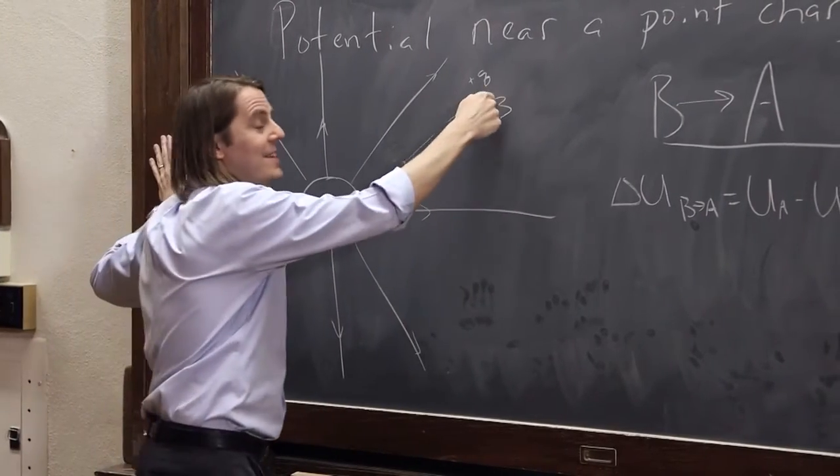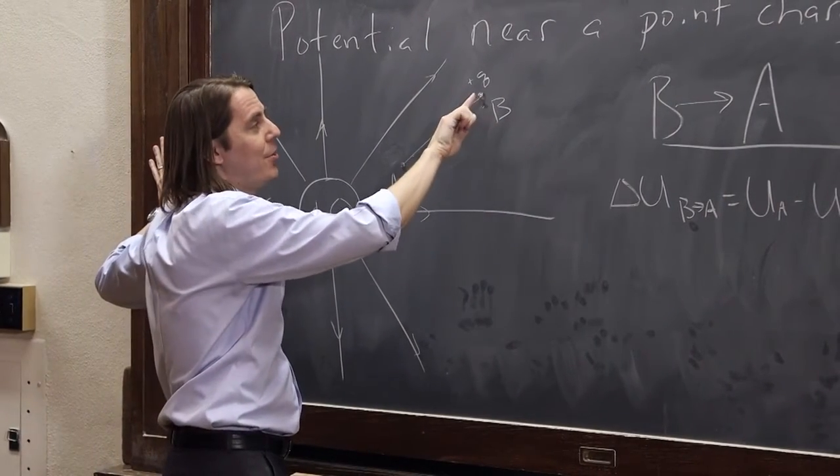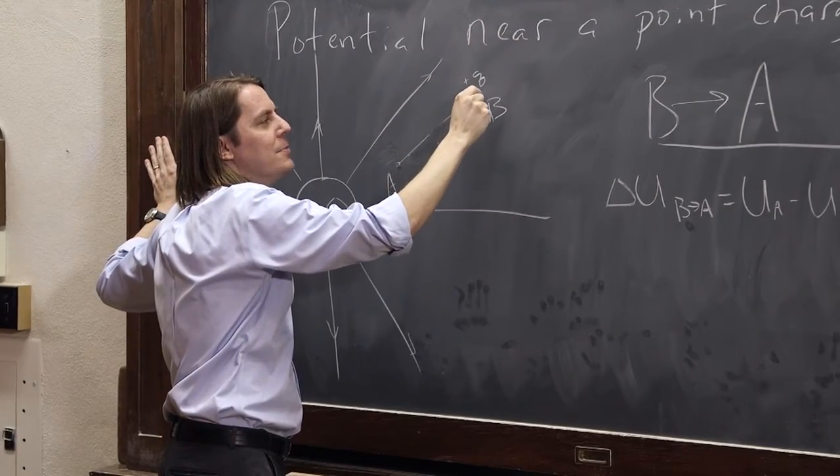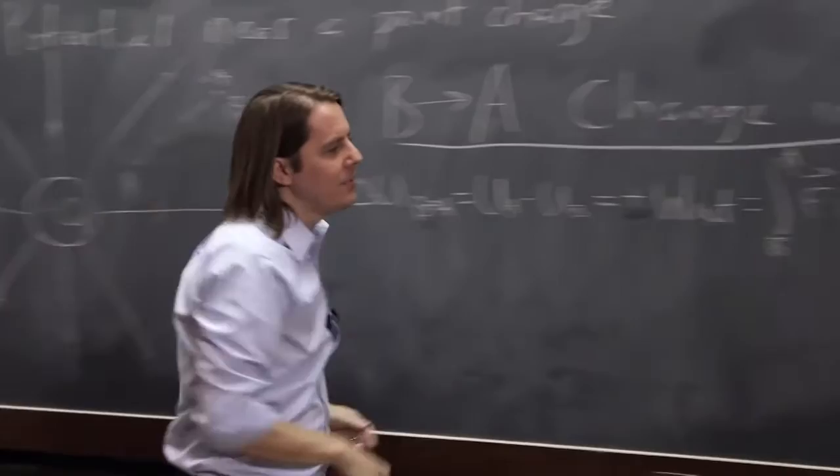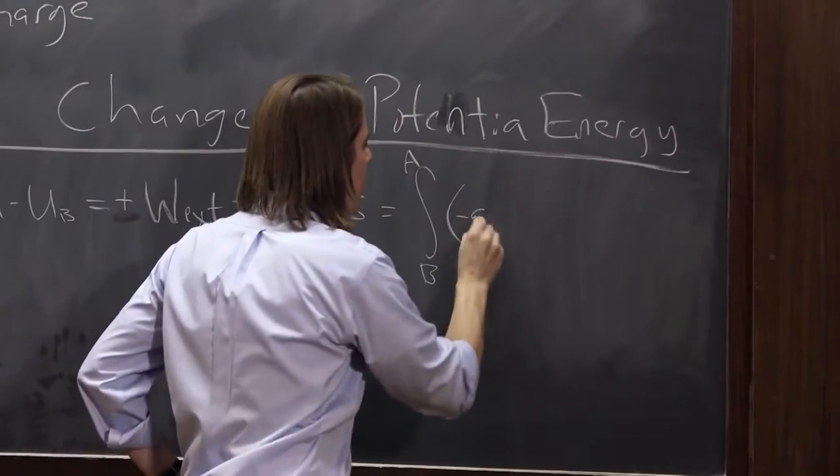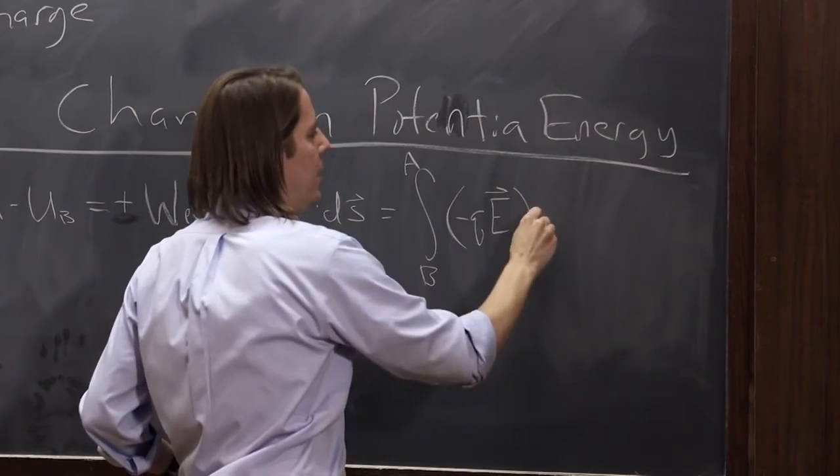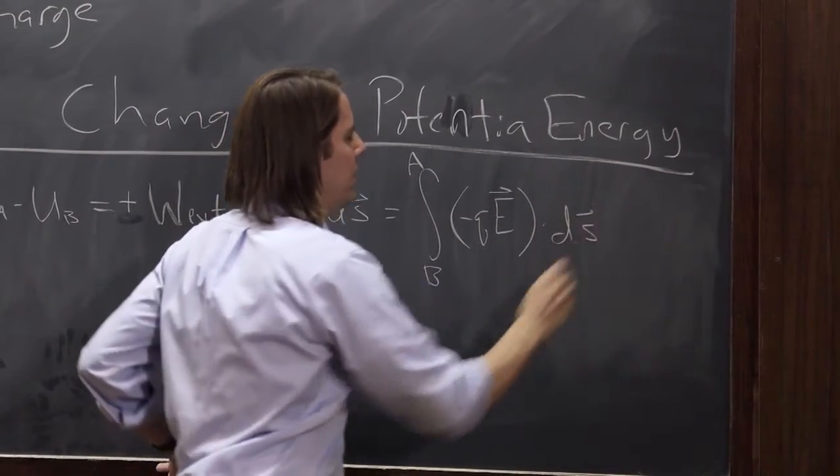The force is against QE. The system applies the force Q times the E field that way. To make the external agent move it, it has to apply force the other way. So, a negative sign shows up in here. Minus QE dot dS.